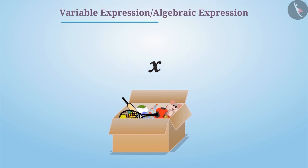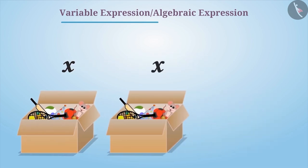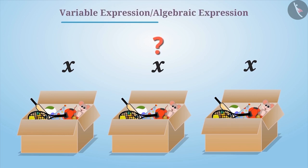Similarly, if we keep two more boxes with the first box, each having an equal number of toys, then what will be the total number of toys? The total number of toys will be 3 multiplied by x, that is 3x.